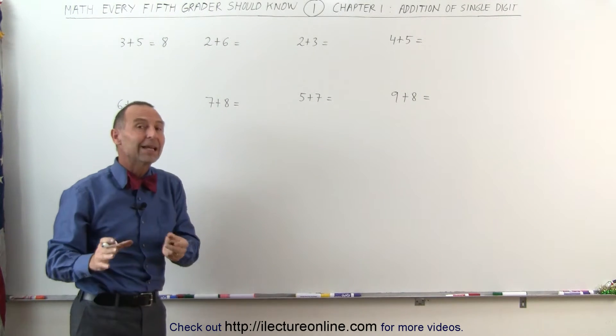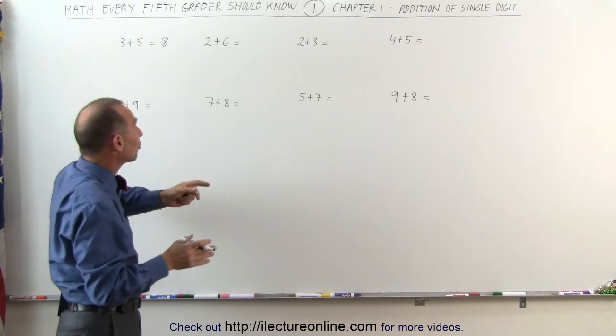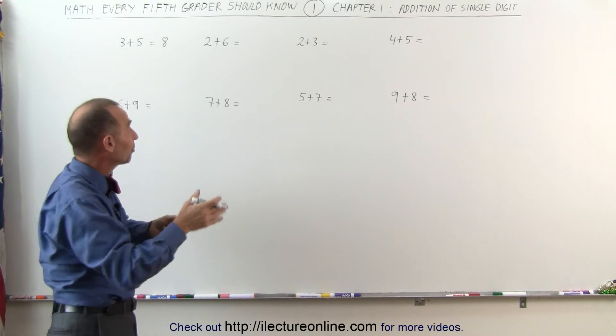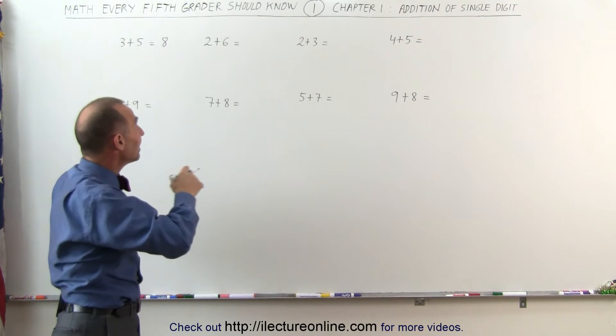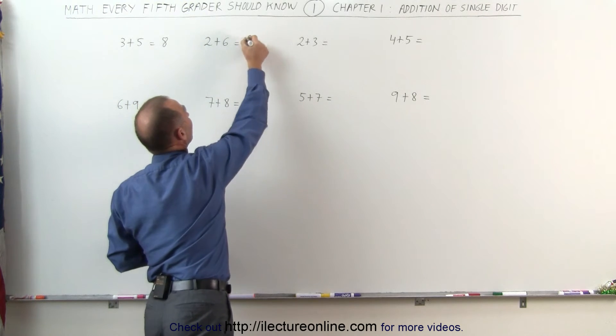Here again, we have 2 plus 6, but again, it's easier to think of starting with the bigger number, 6, add 2 more to that, 6 plus 2, 7, 8. 2 plus 6 equals 8.